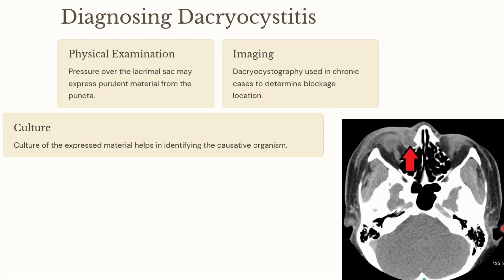Diagnosis: pressure over the lacrimal sac may express purulent material from the puncta. Imaging or dacryocystography may be used in chronic cases to determine the location and extent of the blockage. Culture of the expressed material can help to identify the causative organisms.